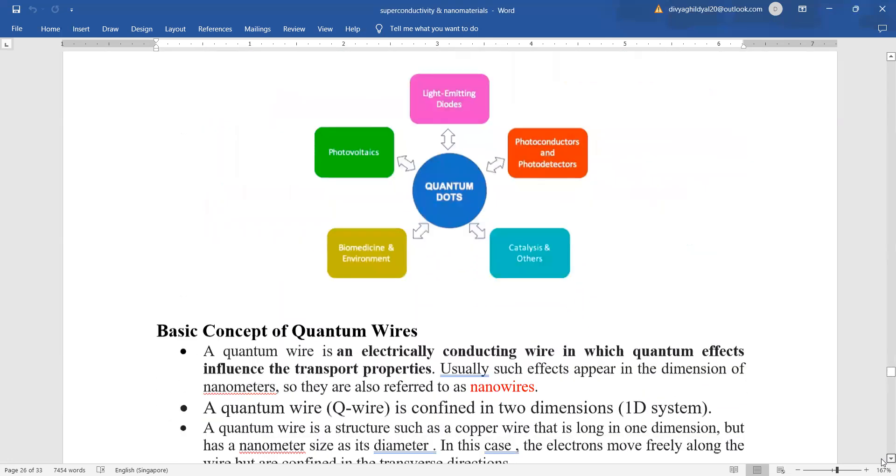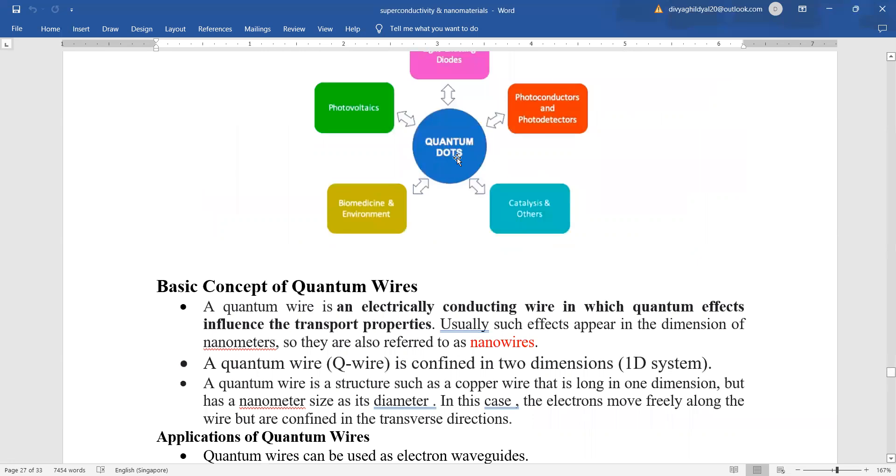That is all. In general, you can have a look at this diagram. Quantum dots are used in photovoltaic cells, photoconductors, as catalysts, in biomedicine, for the environment and for diodes.